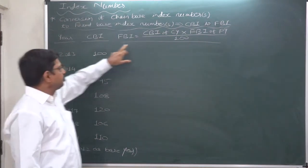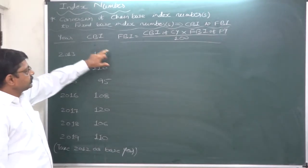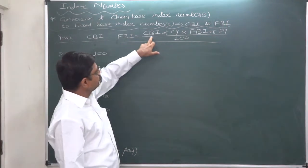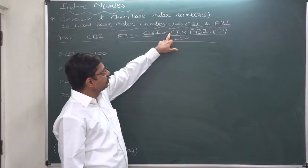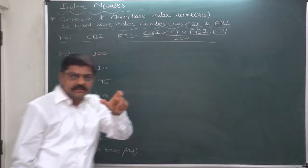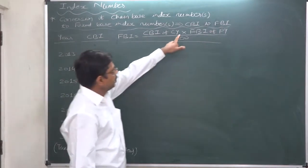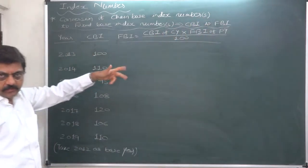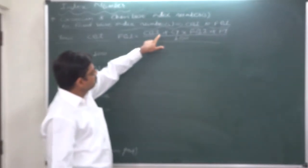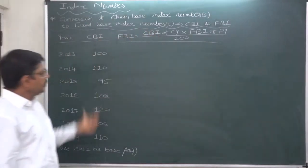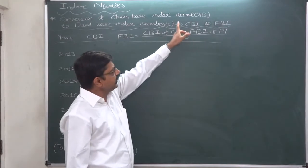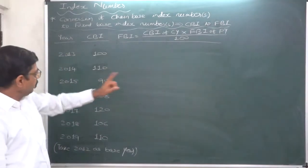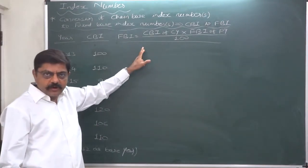It's very easy — just a formula based on ratio and proportion is to be used. When we want to calculate the fixed base index number from the chain base index number, the formula is: Fixed Base Index Number equals the chain base index number of the current year multiplied by the fixed base index number of the preceding year, divided by 100. Take the chain base index number readily available for the current year, multiply it by the fixed base index number of the preceding year — which is the result of your previous calculation.